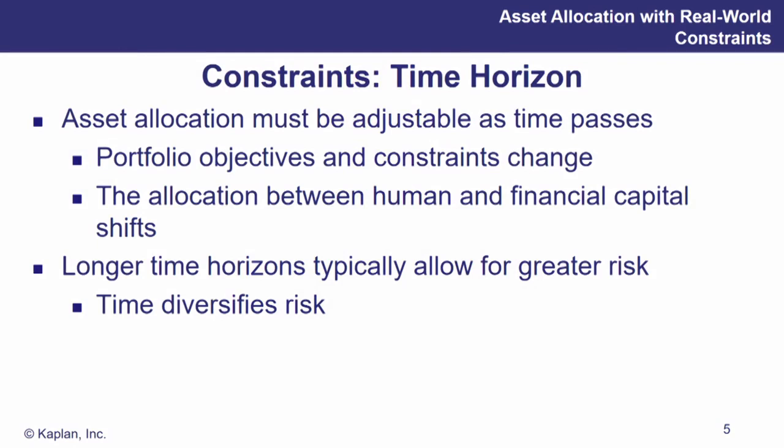Portfolio objectives and constraints can change over time. The allocation between human and financial capital shifts — particularly for individuals. If you start a client at age 30 with a large amount of human capital ahead of them but very little financial capital, that's a very different scenario than when they're 55, starting to get close to retirement, with human capital shrunk down and financial capital hopefully grown immensely. Longer time horizons typically allow for greater risk — we want to invest in equities when we have a long time period. Time does diversify our risk; the longer the horizon, the more the client can ride out peaks and valleys and get a solid rate of return.